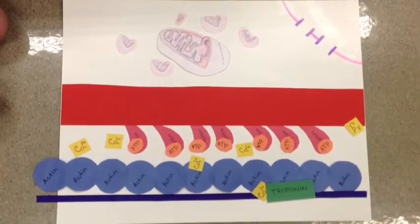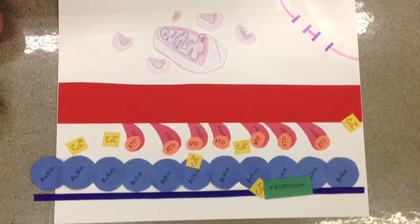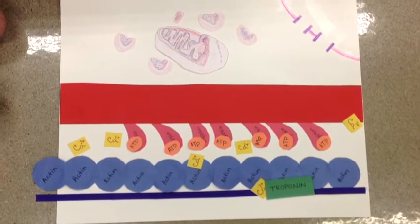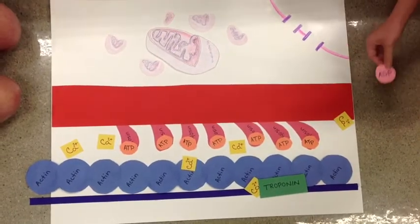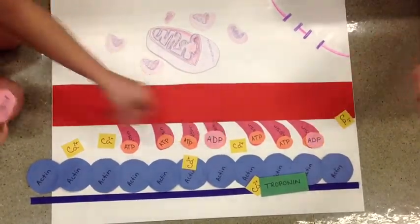ATP being released by mitochondria binds to the myosin head causing the head to break free from the active site on the actin. The myosin head becomes energized as ATP is converted to ADP.